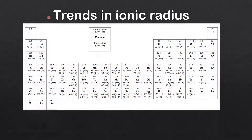Next we look at trends in ionic radius. Starting with group 1, which forms 1+ ions, the ionic radius of lithium is 76 times 10 to the negative 12 meters, and as we go down group 1, you can see that the ionic radius is increasing.